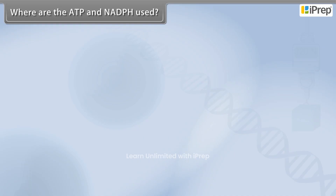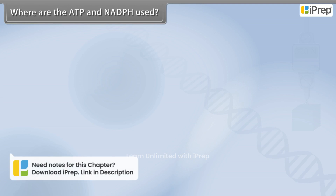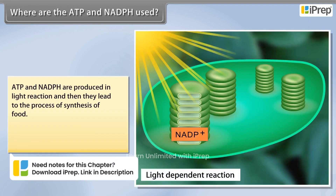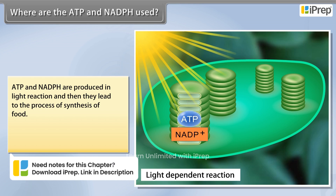Where are the ATP and NADPH used? ATP and NADPH are produced in the light reaction and then they lead to the process of synthesis of food.